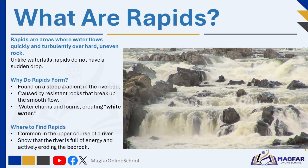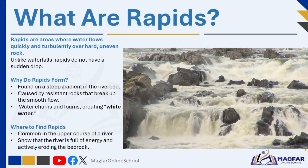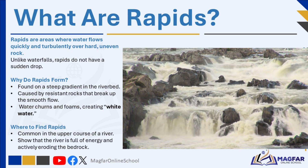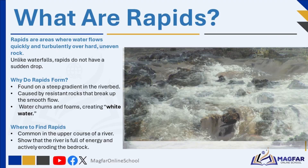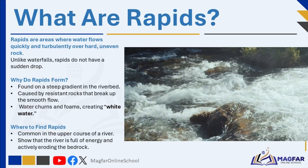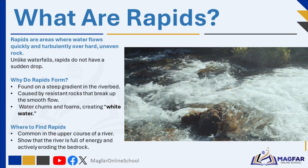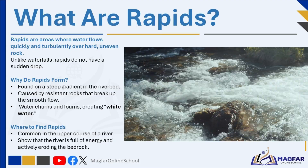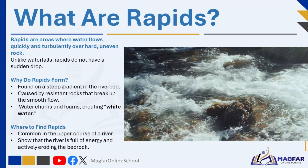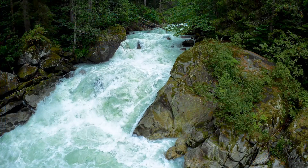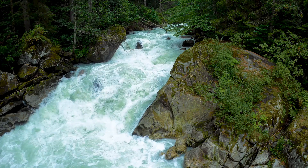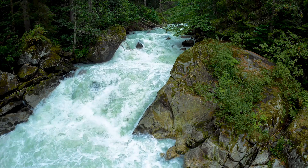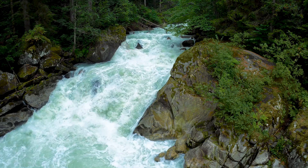Rapids are sections of a river where the water flows quickly and turbulently over hard, uneven rock surfaces. Unlike waterfalls, rapids do not involve a sudden vertical drop. Instead, they form where the riverbed has a steep gradient combined with resistant rocks that disrupt the smooth flow of water. This causes the water to churn and foam, creating what is often called white water. Rapids are commonly found in the upper course of a river and indicate areas of high energy where erosion is actively shaping the riverbed.